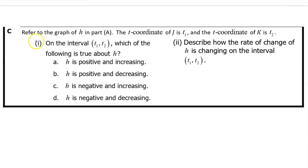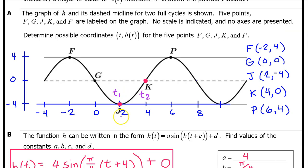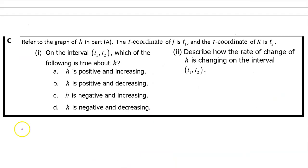Part C. Refer to the graph of H in Part A. The T coordinate of J is T1, and the T coordinate of K is T2. In this case, T1 is 2, and T2 is 4. Part 1. On the interval from T1 to T2, which of the following is true about H? Is H positive and increasing, positive and decreasing, negative and increasing, or negative and decreasing?